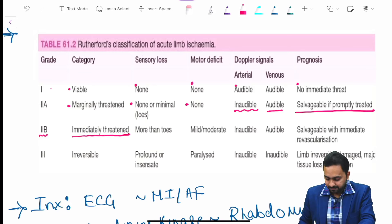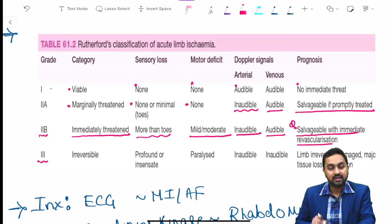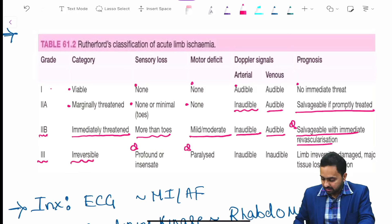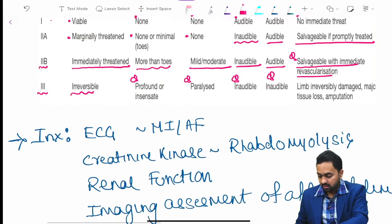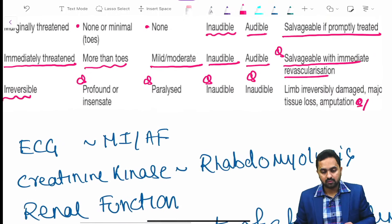Stage 2b is immediately threatened: sensory loss more than toes, mild to moderate motor deficit, inaudible arterial and audible venous, salvageable with immediate revascularization. Grade 3 is irreversible: profound or insensate and paralyzed motor deficit, arterial inaudible, venous inaudible, requires amputation.